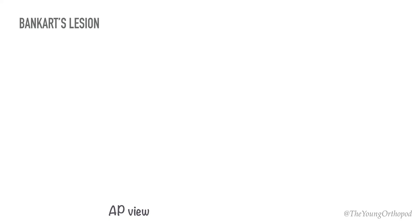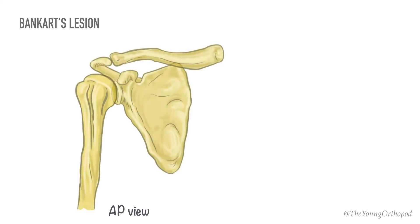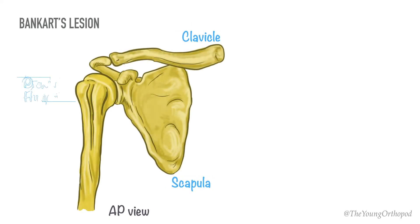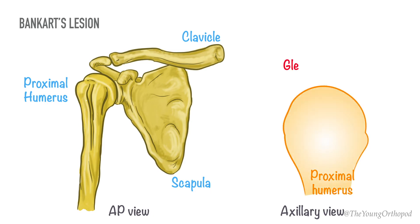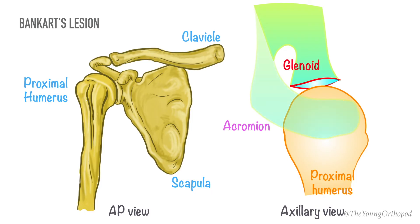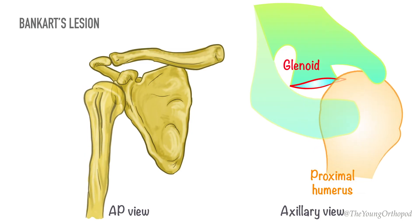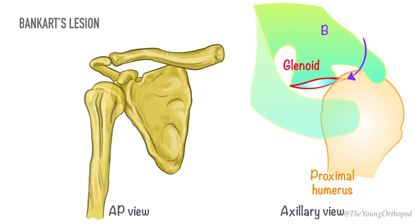Let us first understand the Bankart's lesion. In case of an anterior shoulder dislocation, the head of the humerus is driven forward, tearing the capsule and producing avulsion of the anterior glenoid labrum. This is called the Bankart's lesion.